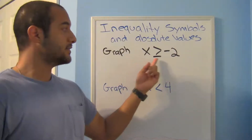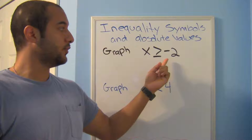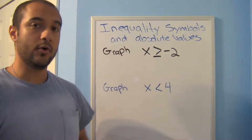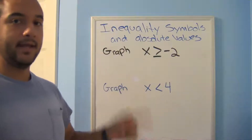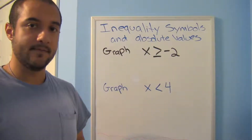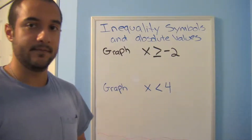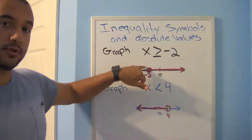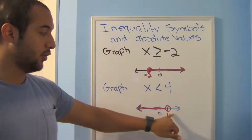Here are two problems for you: x greater than or equal to negative two, and x less than four. Go ahead and graph those. Your answers — notice the first has a closed circle, bubbled in, and the second has an open circle.